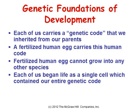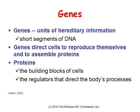Each of us carries a genetic code inherited from our parents. A fertilized human egg carries this human code and cannot grow into any other species. Each of us began life as a single cell which contained our entire genetic code. Genes are units of hereditary information — short segments of our DNA — that direct cells to reproduce themselves and to assemble proteins.